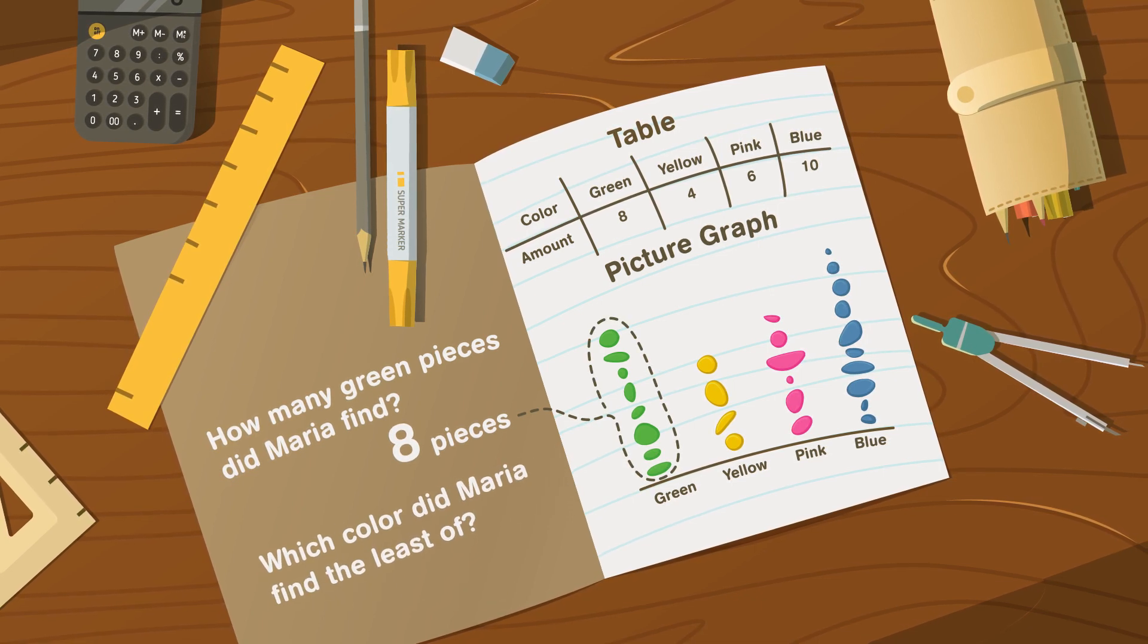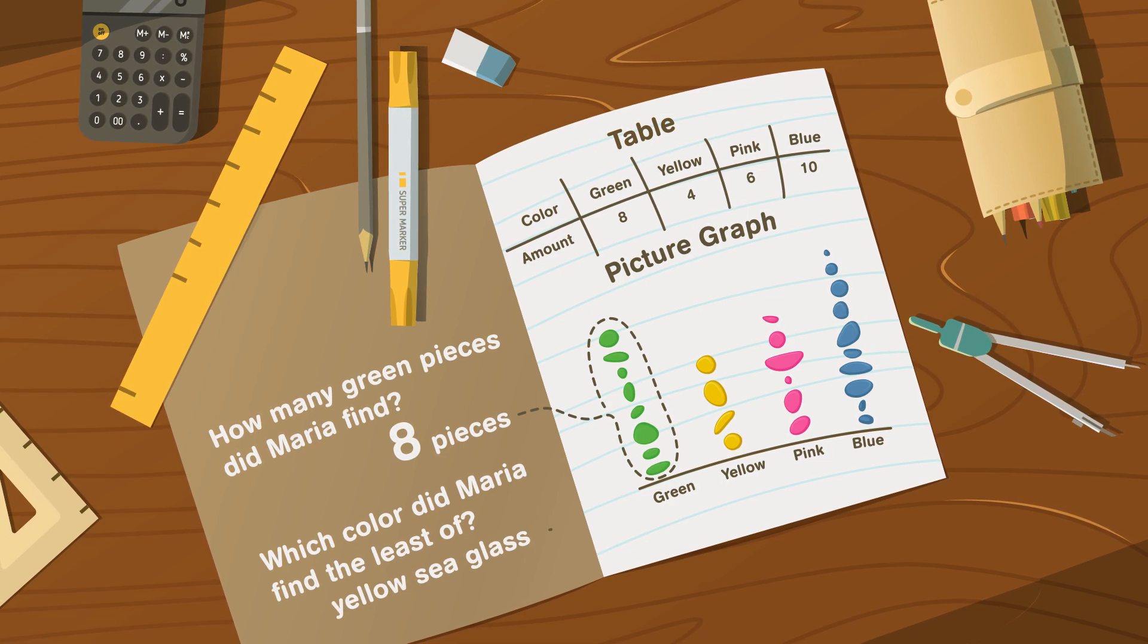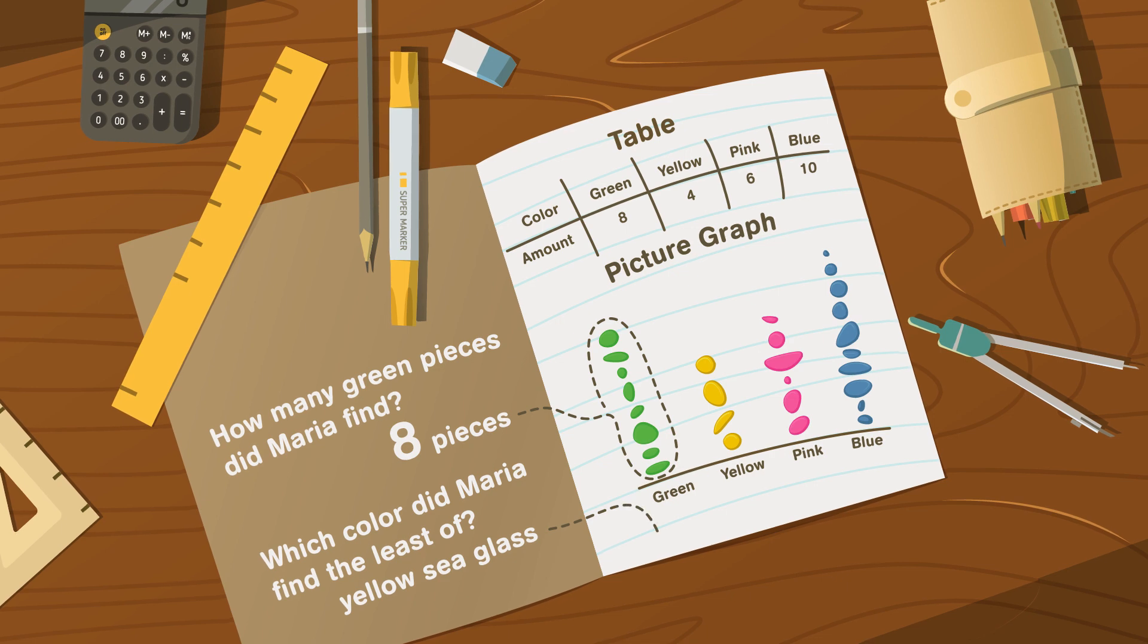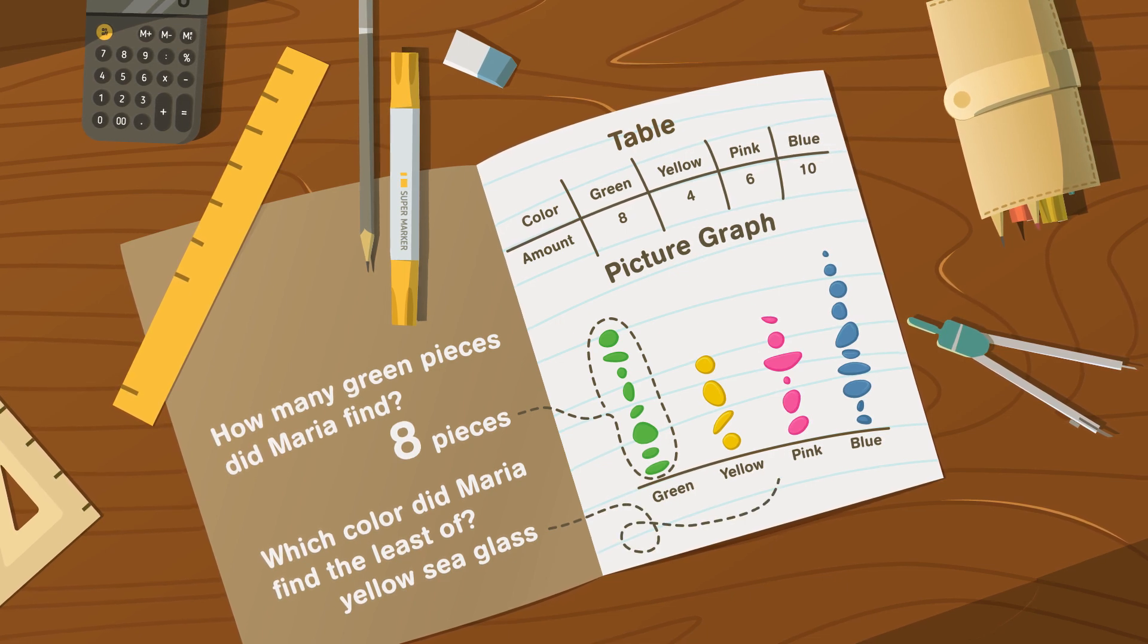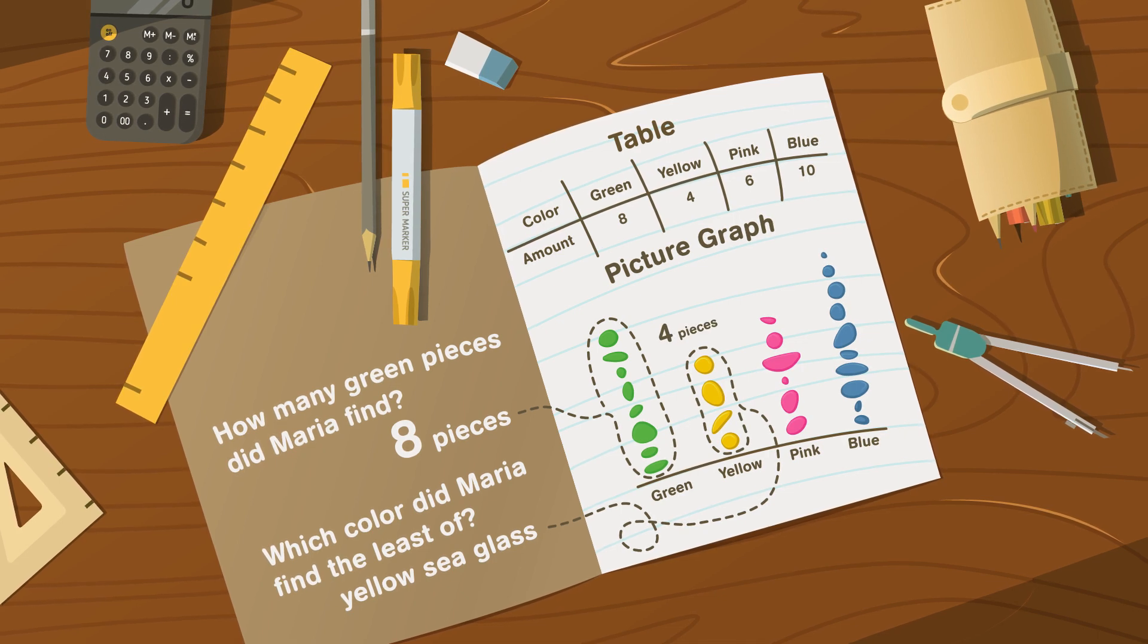Which color did Maria find the least of? She found the least yellow sea glass. You can tell because there are the fewest number of pictures in the yellow category. She only found four pieces.